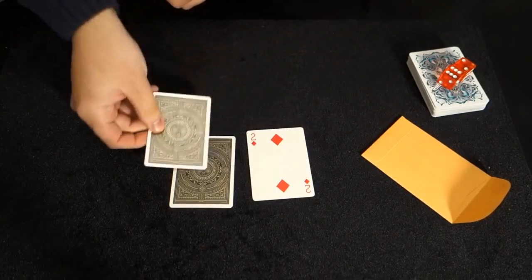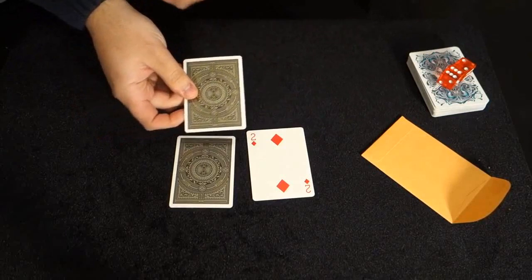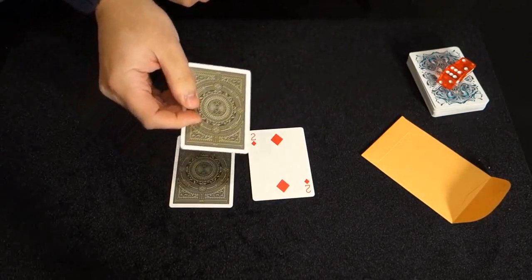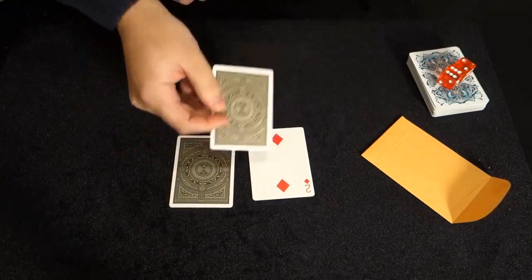But you also ended up on the two of diamonds. See, that's the crazy part. The odds of me getting the back right? That, you know, it could happen. I may have just gotten lucky. But if I were to get the back and the value correct. That double prediction.